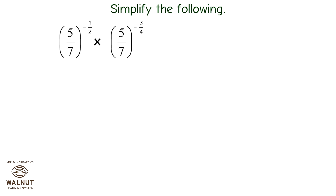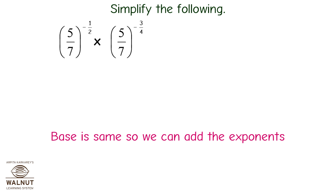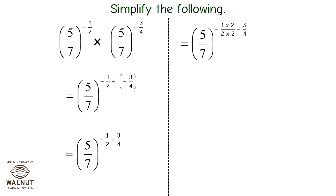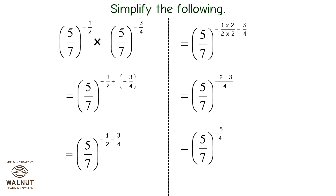Simplify: 5 upon 7 raised to minus 1 upon 2 into 5 upon 7 raised to minus 3 upon 4. The base is the same so we add the exponents. Therefore we get 5 upon 7 raised to minus 1 upon 2 plus minus 3 upon 4, which equals 5 upon 7 raised to minus 1 upon 2 minus 3 upon 4, which equals 5 upon 7 raised to minus 2 minus 3 upon 4, which equals 5 upon 7 raised to minus 5 upon 4. This equals 7 upon 5 raised to 5 upon 4.